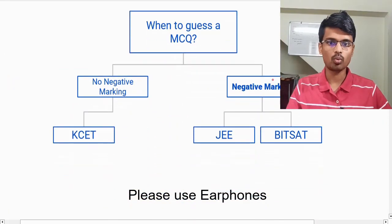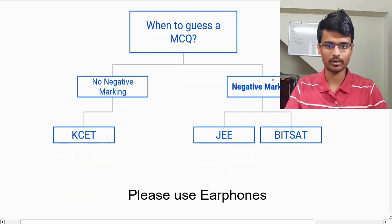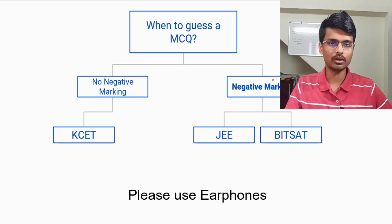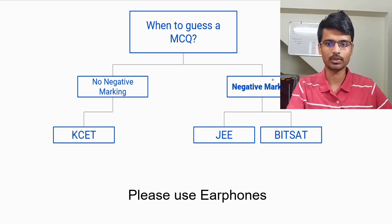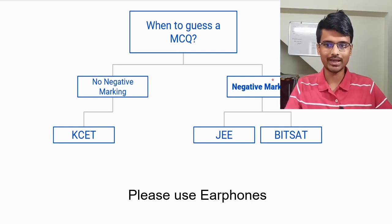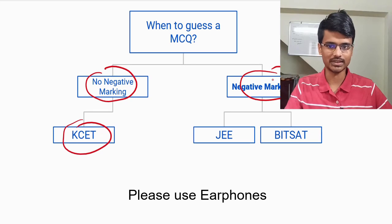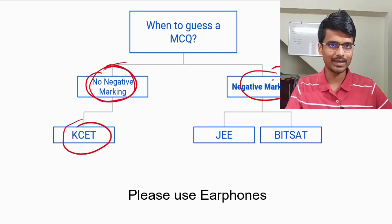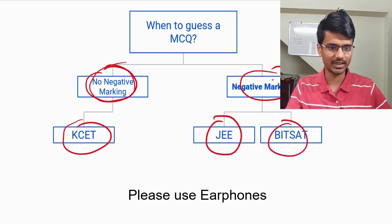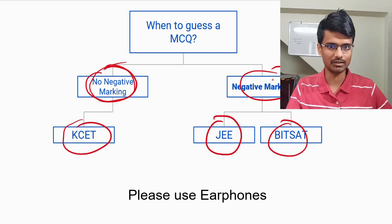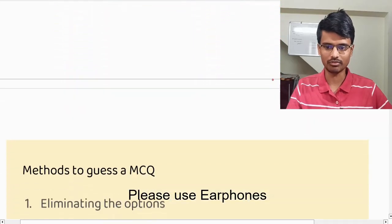First, when to guess an MCQ question — this is very important. You will be writing many papers like JEE Mains, SPIT, KCET, and different exams. You have to check whether that exam has negative marking or not. In the case of KCET — Karnataka Common Entrance Test — there is no negative marking, so you can do the guesswork. But where there is negative marking, as in JEE Mains and BITSAT, if you are not able to solve the question, just leave it. That is the wisest option.